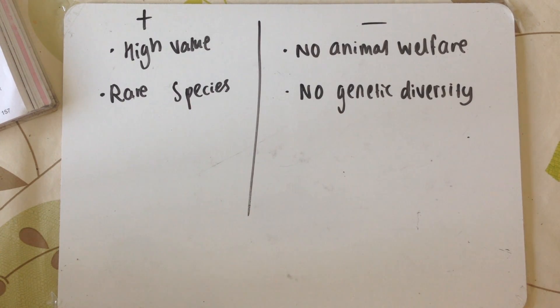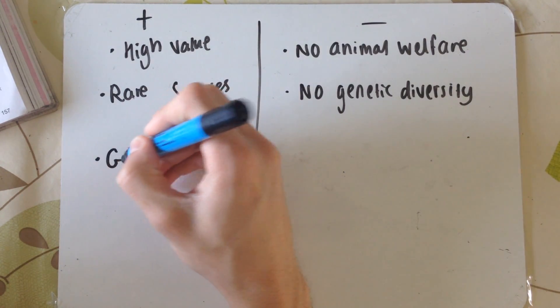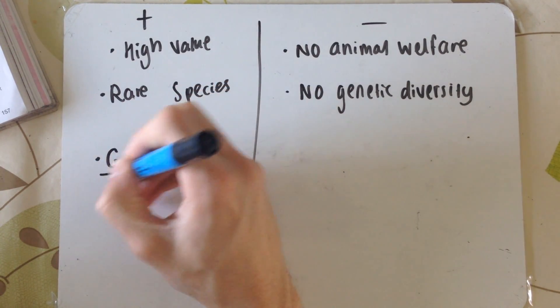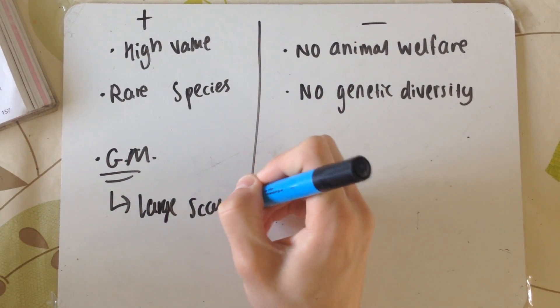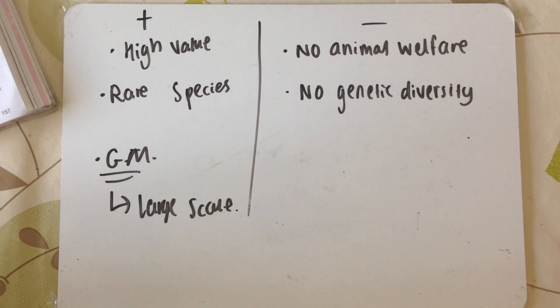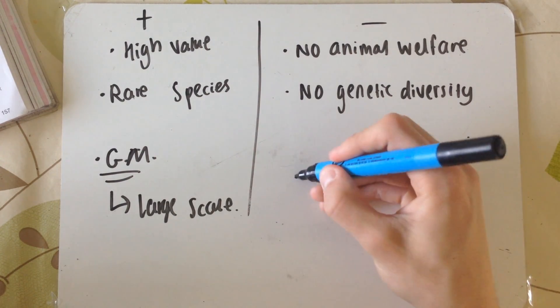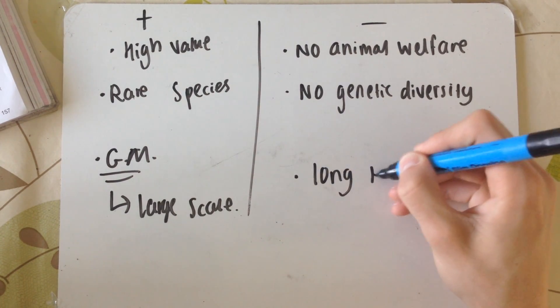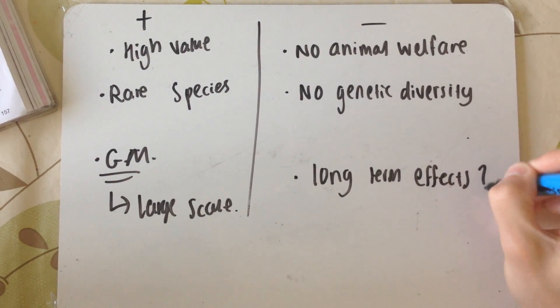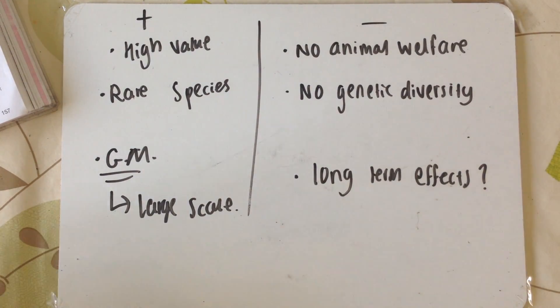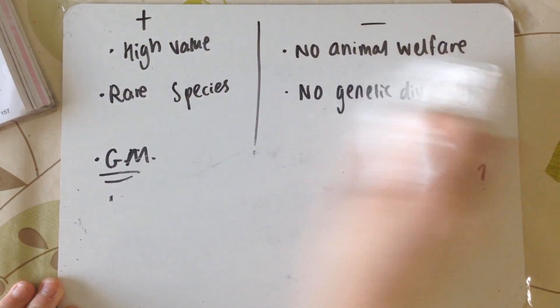Genetically modified animals can be produced on a large scale. Rather than just have one sheep that produces spider silk in milk, we can have hundreds. However, the long term effects and health of these animals is unclear. There's only a certain number of cell divisions that cells can go through. By the time you get to 5 years old, you could really be 10 years old.